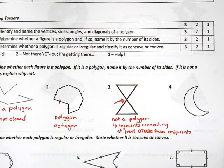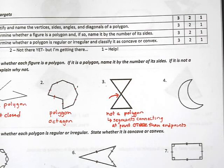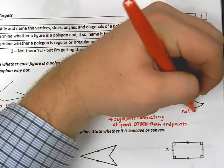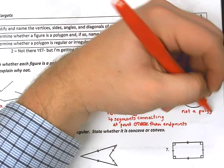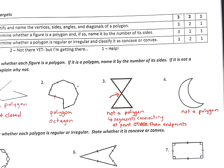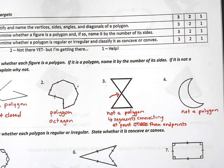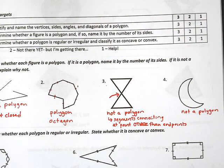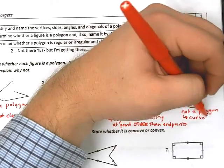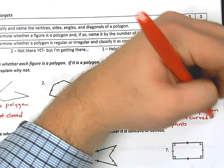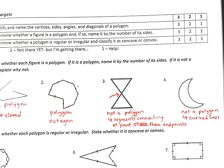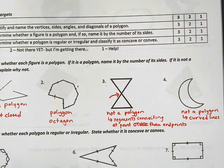The last one, number four, is hopefully one of the easier ones. This is also not a polygon — because polygons are made up of sides, and sides have to be segments. Segments have to be straight, like pieces of a line. So we're going to say this is not a polygon because it has curved lines. These are not segments. That is why that is not a polygon.